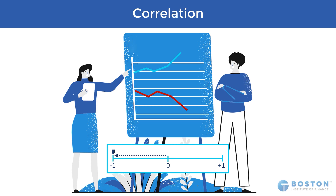A correlation coefficient of zero means that the two securities move completely randomly from one another and don't have any relationship.